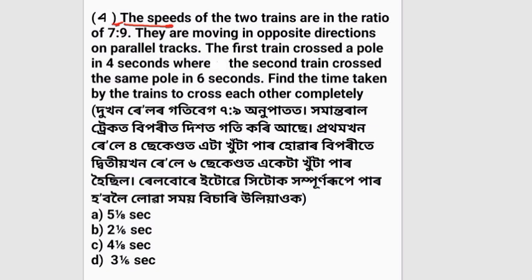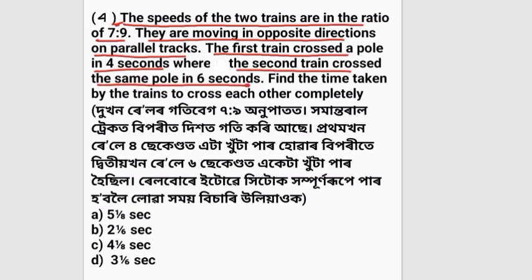The speeds of two trains are in the ratio of 7 to 9. They are moving in opposite directions on parallel tracks. The first train crossed a pole in 4 seconds and the second train crossed the same pole in 6 seconds. Find the time taken by the trains to cross each other.